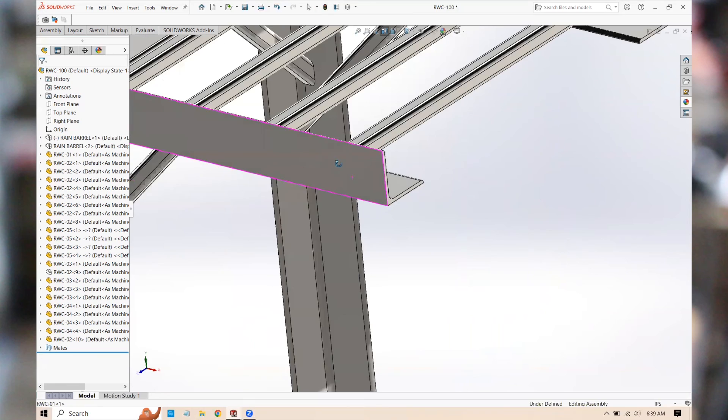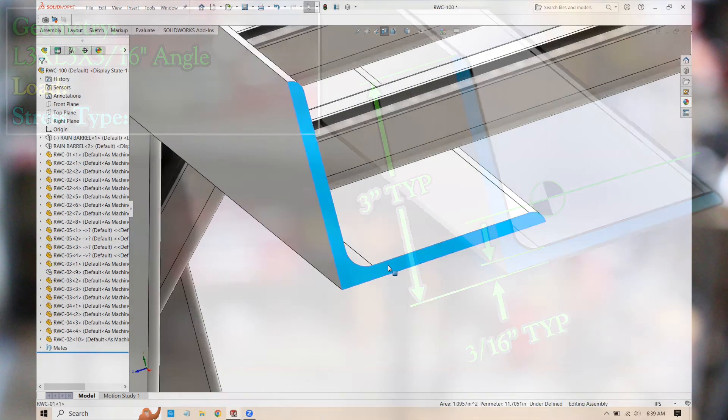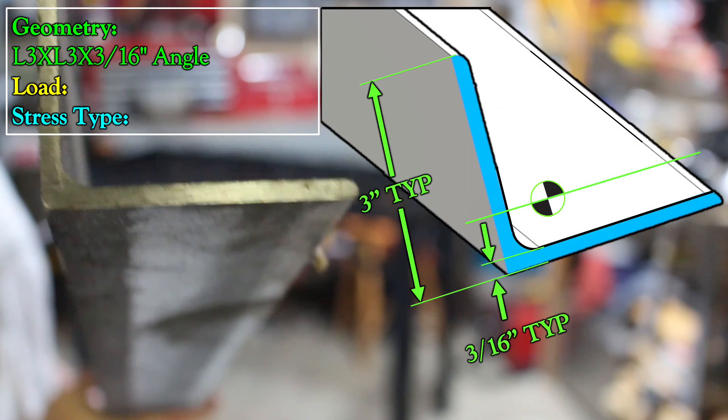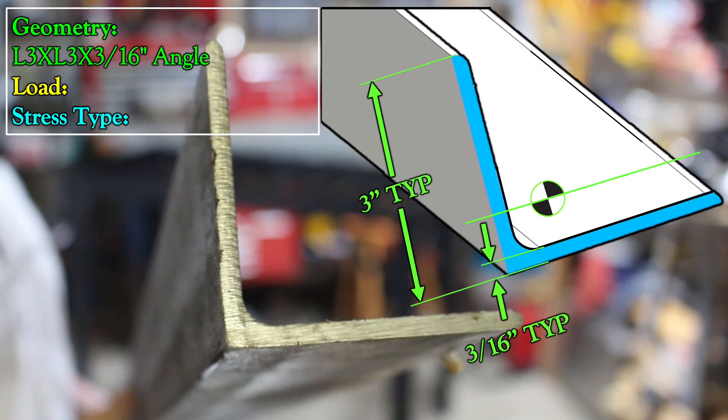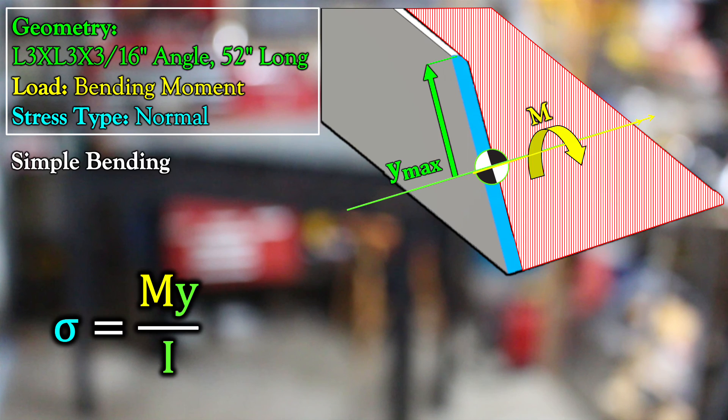All that we've done so far has been for the square tube. But real quickly, let's consider the angle. Here we have a 3x3 angle with 3/16ths wall thickness. If we ignore the floppy leg, we can model it as one rigid piece of flat bar. Our analysis won't be as accurate, but it will be more conservative. So this is often what I do when I have angle, because I know if my structure is safe with only one leg of my angle, it's definitely safe with both legs. And the analysis is so much simpler. I can just apply My over I for the stress response to the bending moment in the angle iron.